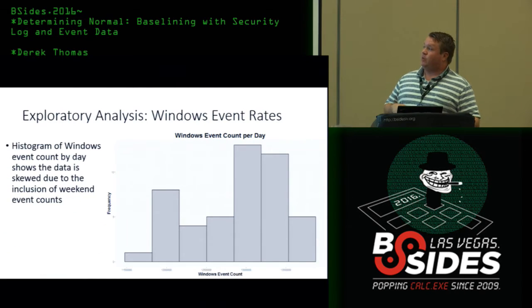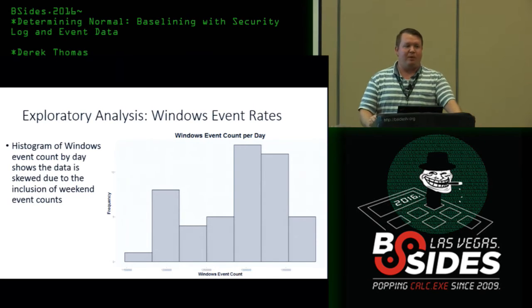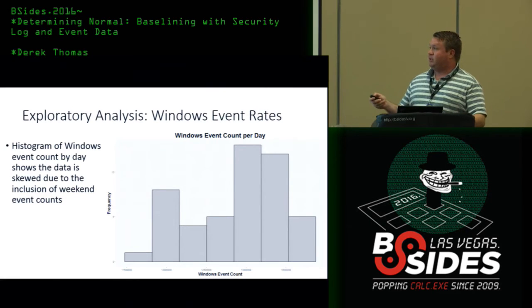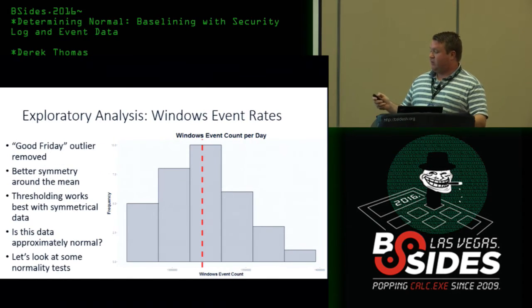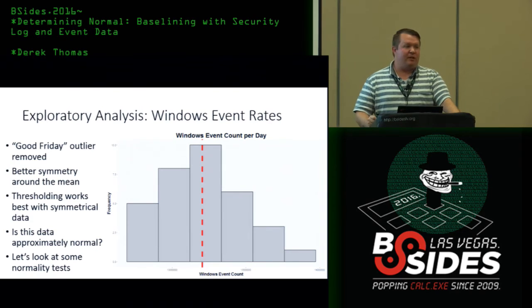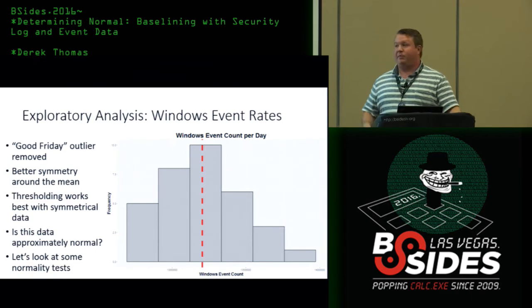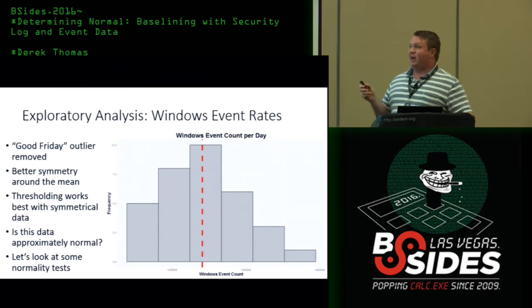A histogram will bin the data into groups and tell you the frequencies. In normally distributed data you'll see symmetry around the median. Here you can see skewed data due to the weekends. After removing the weekends, we see better data with better symmetry, but there's still the Good Friday outlier. After removing that, the data looks much better — we still think it could be slightly skewed, but we're only looking at about 30 data points, and data is never going to be perfectly distributed.